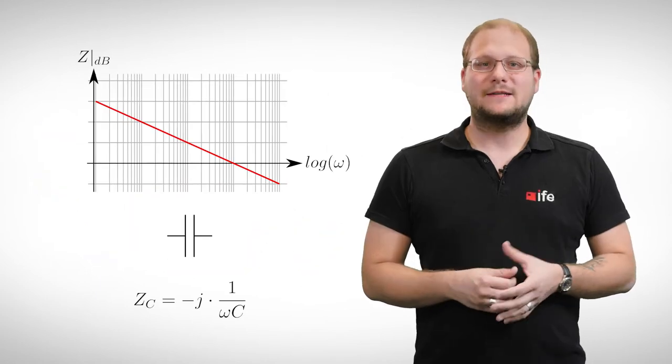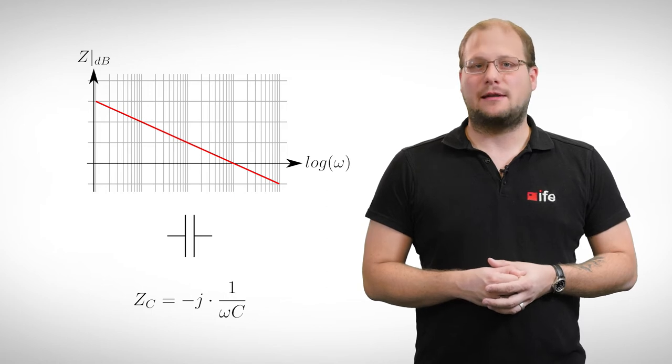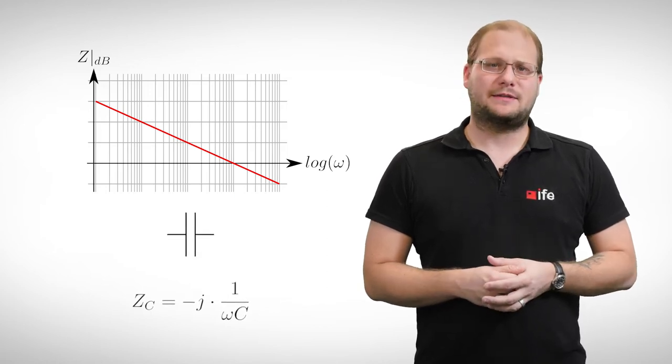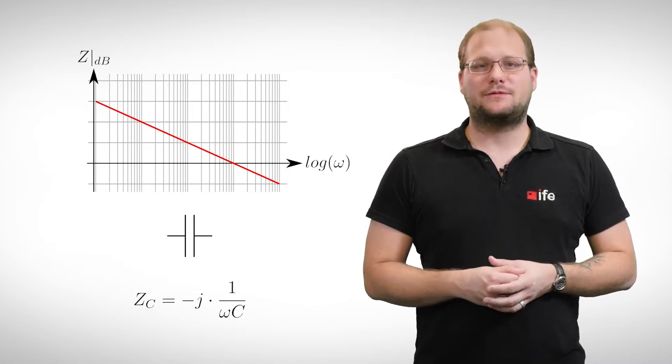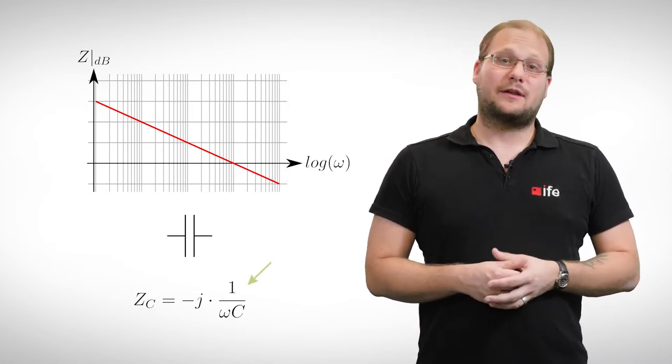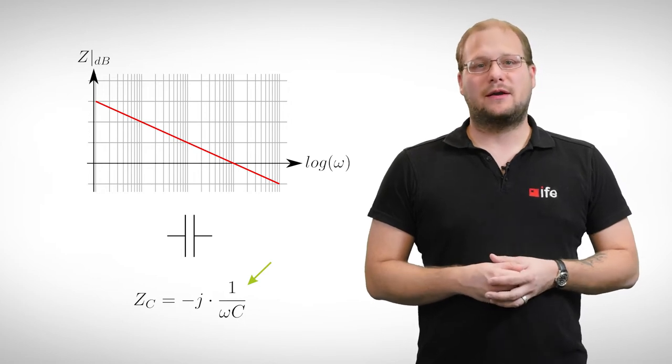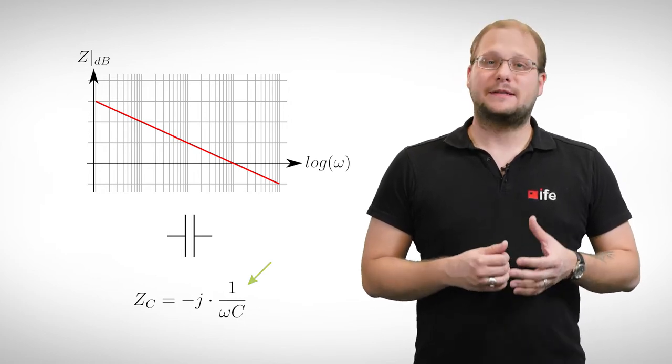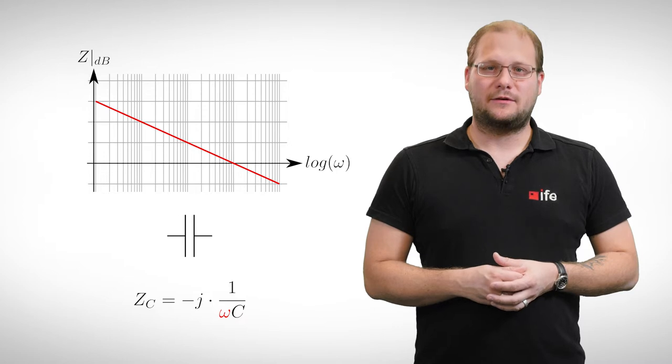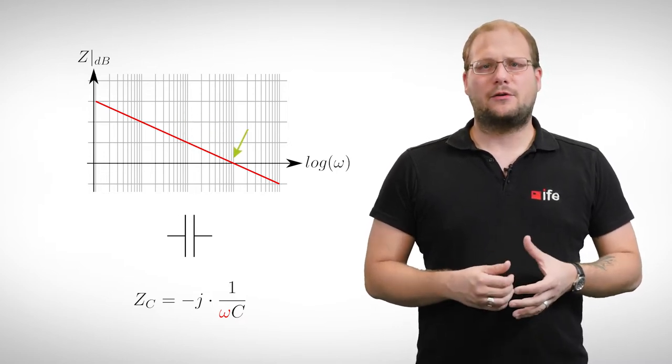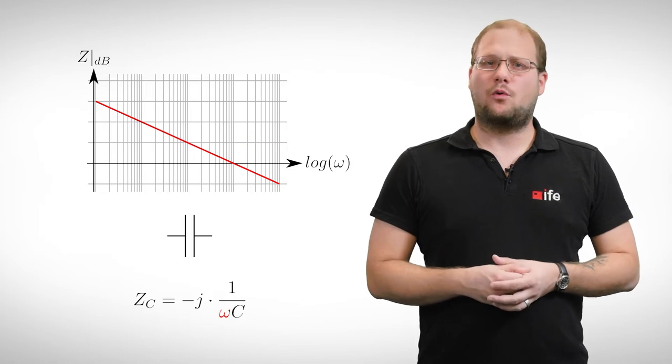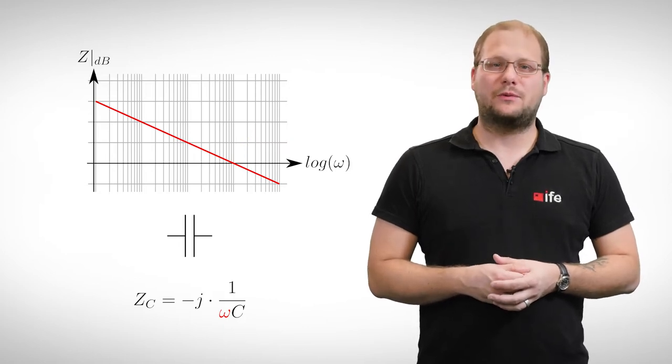Another property is the frequency dependency of our elements, at least for the capacitor and the inductor. This can be seen in the formulas for their impedance. The impedance of the capacitor is 1 over omega times C. Since omega is in the denominator, the impedance decreases with higher frequencies. In other words, the capacitor becomes more and more invisible for high-frequency signals.